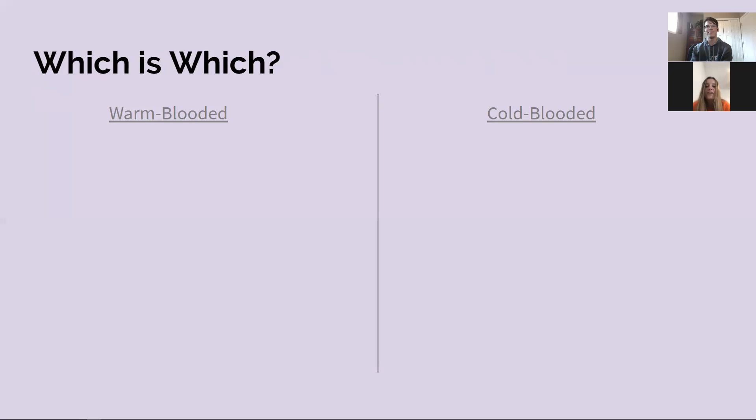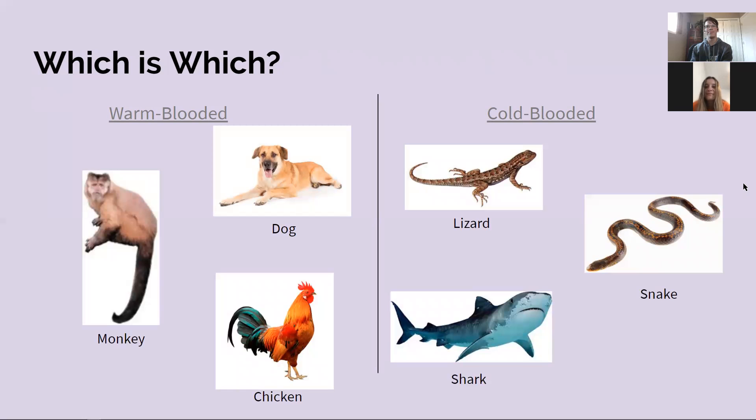Now that you've said which category you think they're all in, we're gonna show you the answers. In the warm-blooded category, we have the monkey, the dog, and the chicken. And in the cold-blooded we have the lizard, the snake, and the shark.